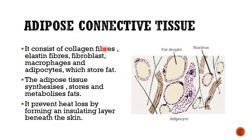Adipose connective tissue consists of collagen fibers, elastin fibers, fibroblasts, macrophages, and adipocytes. Instead of mast cells, the third cell here is adipocytes, which store fat. You can see fat droplets and adipocyte cells in the image, along with white and yellow fibers, all present in the matrix. Adipose tissue synthesizes, stores, and metabolizes fats; it prevents heat loss by forming an insulating layer beneath the skin and protects vital organs by providing a cushion-like covering around the heart and other organs.